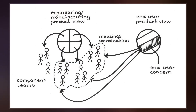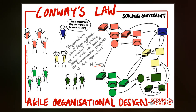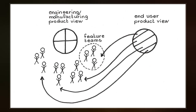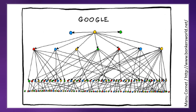His original wording was that the law is based on the reasoning that in order for a software module to function, multiple authors must communicate frequently with each other. Therefore, the software interface structure of a system will reflect the social boundaries of the organizations that produced it, across which communication is more difficult.